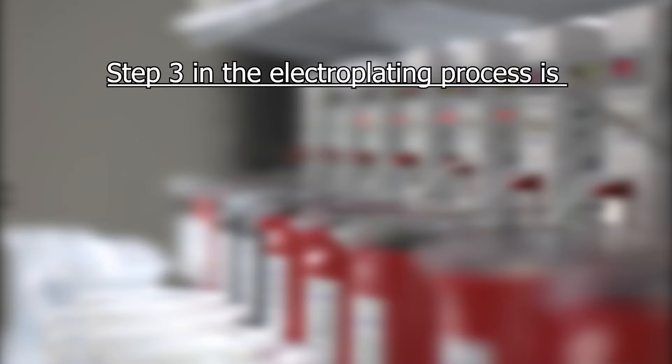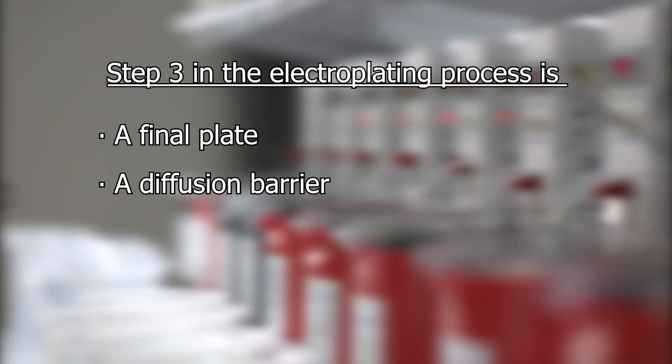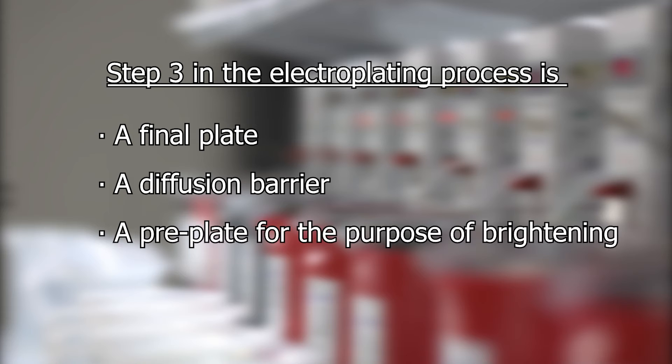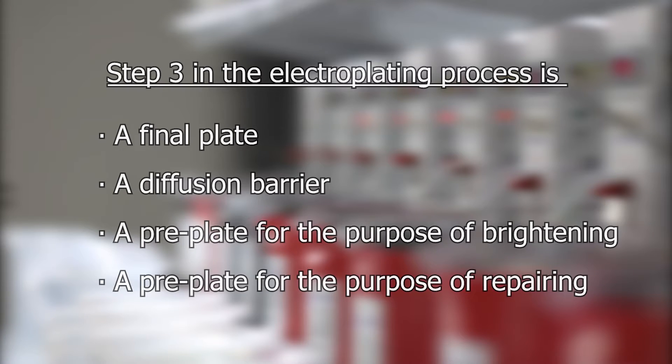Today we're going to be talking about diffusion barriers and pre-plates. Step three in the electroplating process is the application of a final plate, a diffusion barrier, a pre-plate for the purpose of brightening, or a pre-plate for the purpose of repairing.